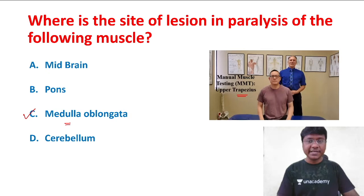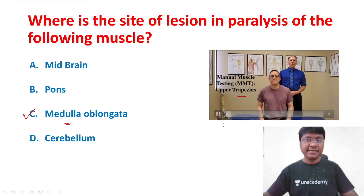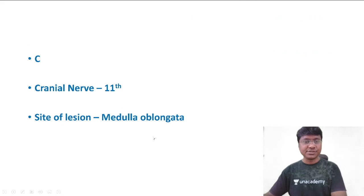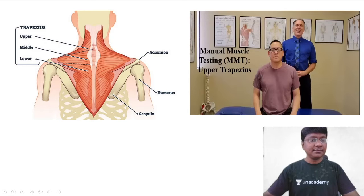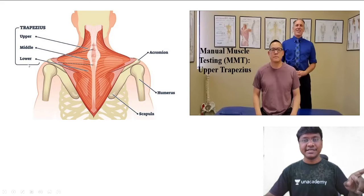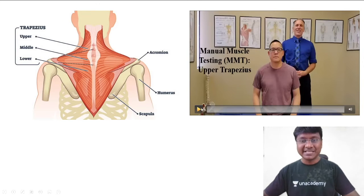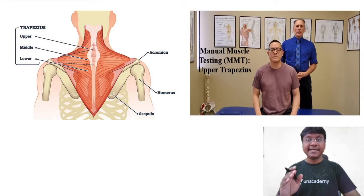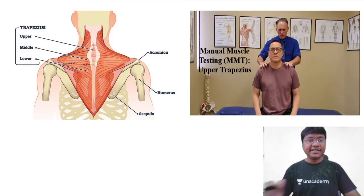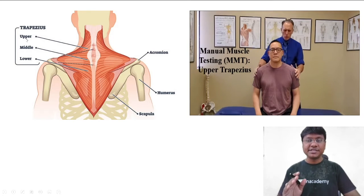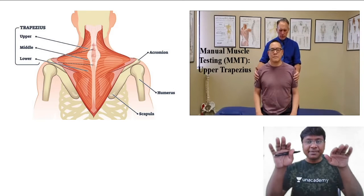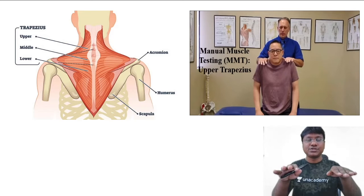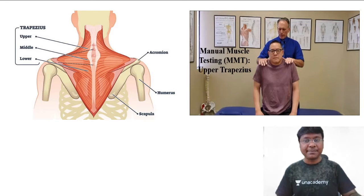You should know how to examine the various parts of the trapezius. The trapezius has three parts: upper, middle, and lower. The examination method is not the same for each. Let me show you the demonstration. For examination of the upper part of the trapezius, the patient is asked to shrug the shoulders. We apply resistance over the shoulders and the patient has to shrug against it, which tells you the strength of the upper trapezius.